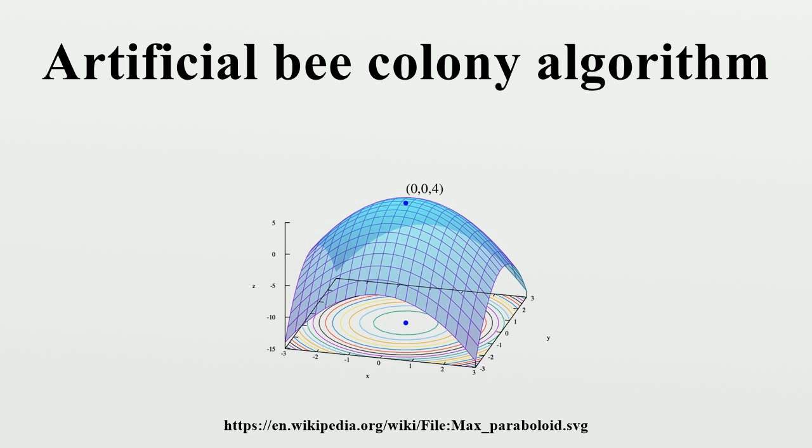In the ABC model, the colony consists of three groups of bees: employed bees, onlookers, and scouts. It is assumed that there is only one artificial employed bee for each food source. In other words, the number of employed bees in the colony is equal to the number of food sources around the hive.